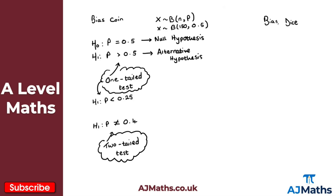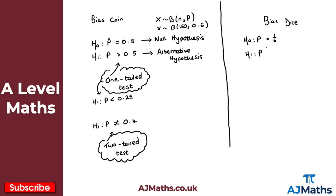Looking at the biased dice example: a die has six faces, so for H0 — the null hypothesis — we can model this as a binomial distribution looking at the probability p. If we suggest that getting a one is biased — more likely than any other face — then H0 states p equals one over six, which is what we'd expect for a fair die. For H1, the alternative hypothesis, if we think it is biased and more likely, we'd say p is greater than one over six. This is another example of a one-tailed hypothesis test.